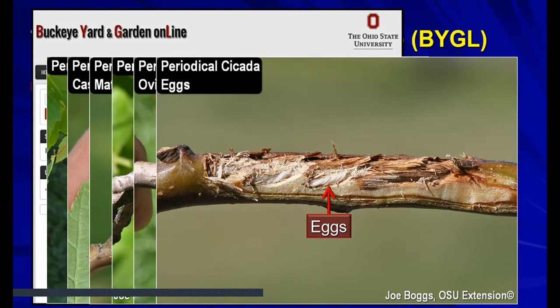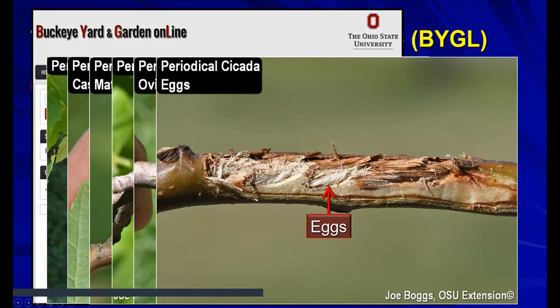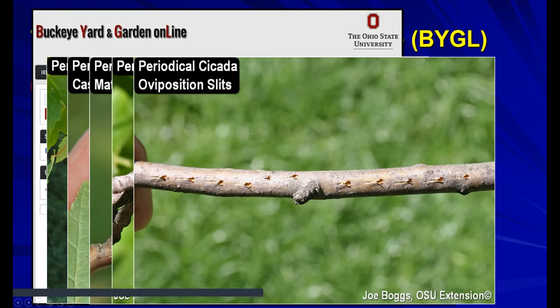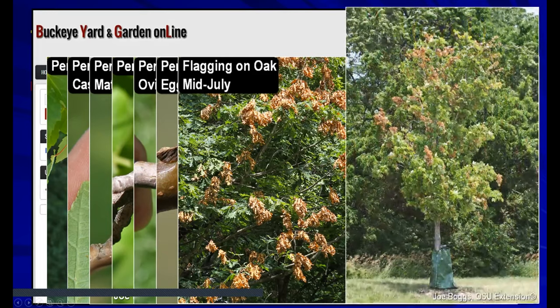The cicada damage causes flagging on purpose - the idea is that by damaging the twig tips, they die and break off, and when the eggs hatch, the nymphs can step right off into the soil where they spend 17 years. By and large they do not cause any great harm, although we are a bit more concerned about newly planted trees.